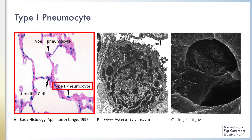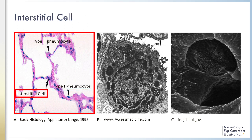Type 1 pneumocytes form 97% of the lining of the lung alveoli. The flattened nucleus of a type 1 pneumocyte is located by the arrowhead in image A. Interstitial cells, denoted by the curved arrow in image A, synthesize and secrete the connective tissue components of the pulmonary inter-alveolar septum, including elastin fibrils, which are important in maintaining the elastic properties of the lungs.